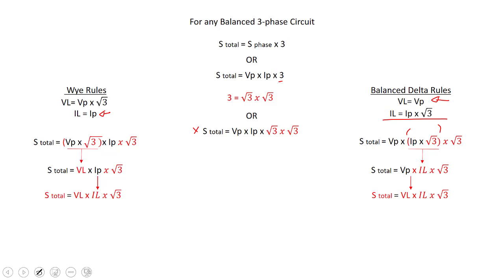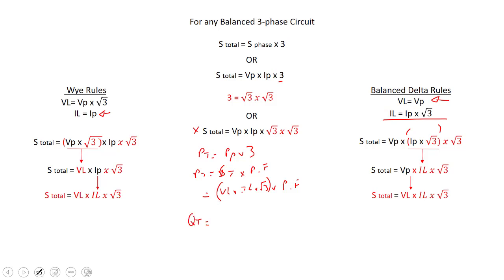This formula works for true power and quadrature power as well. P total equals V_line times I_line times root 3 times power factor, since P total equals S total times power factor. Similarly, Q total for a balanced circuit equals V_line times I_line times root 3 times sine theta — this component is simply S total times sine theta.